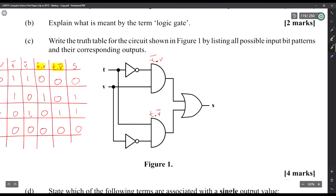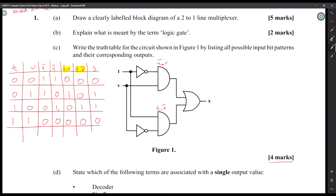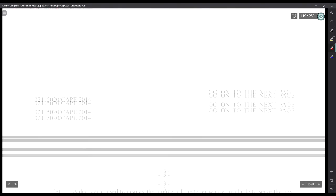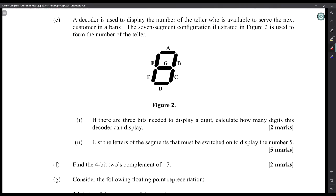Now on part D, state which of the following terms may be associated with a single output value. A decoder has multiple outputs. A flip-flop has one output value. A multiplexer has one output value for sure. A flip-flop technically has two output values - you have Q and Q prime - but I believe that the answer they're looking for is one output value, which is a flip-flop, but that could be wrong.